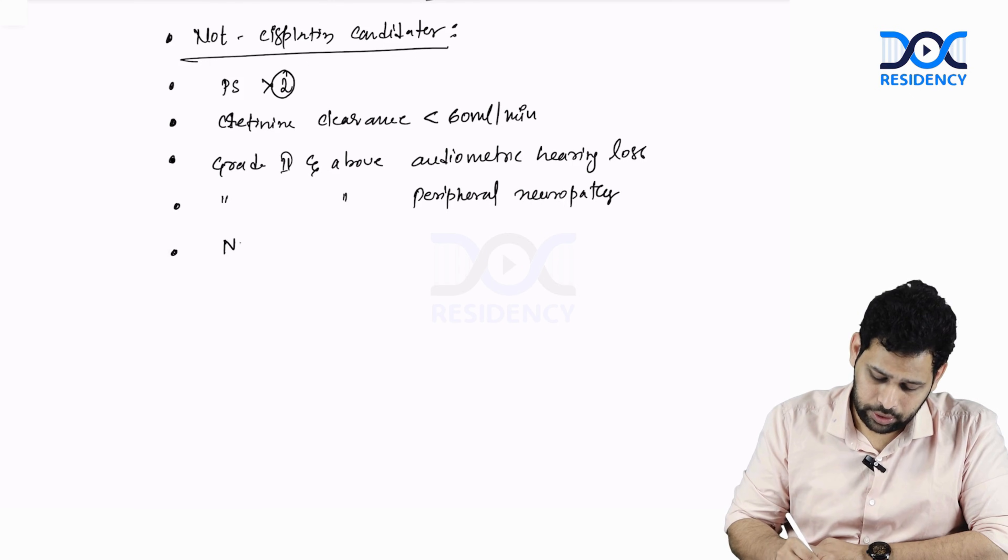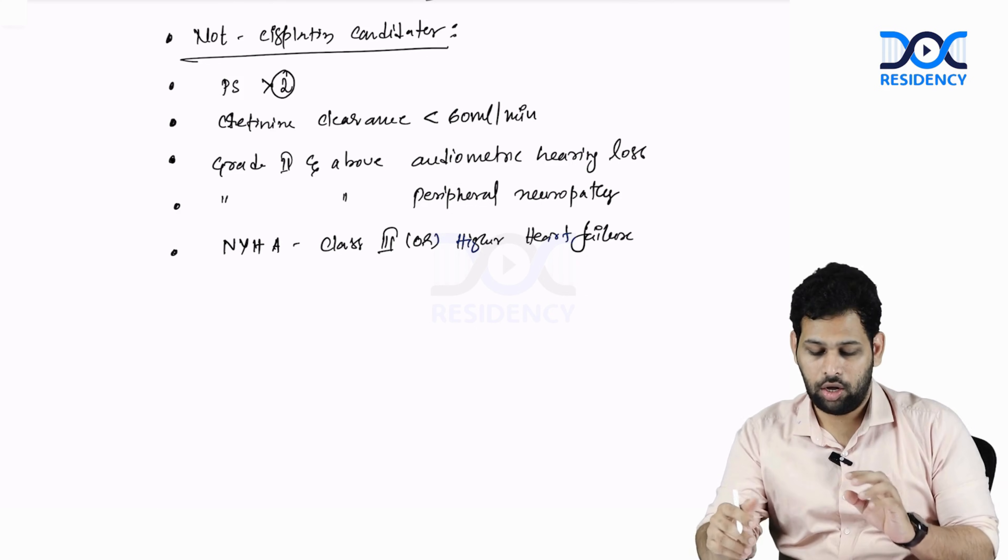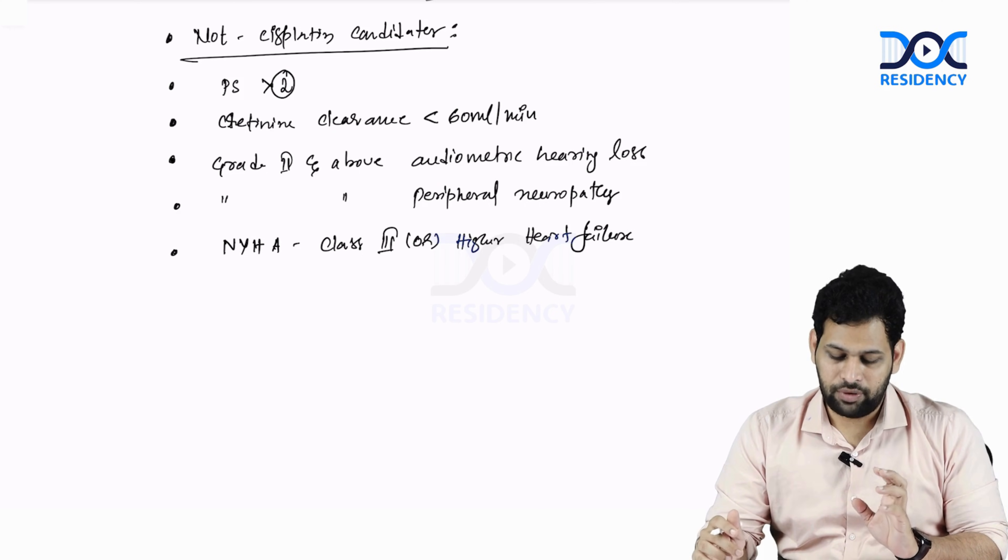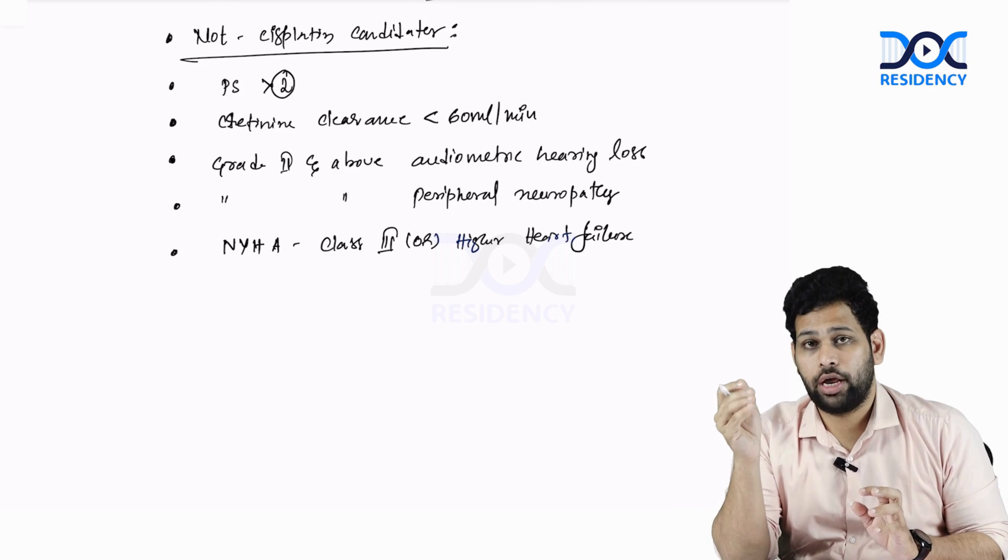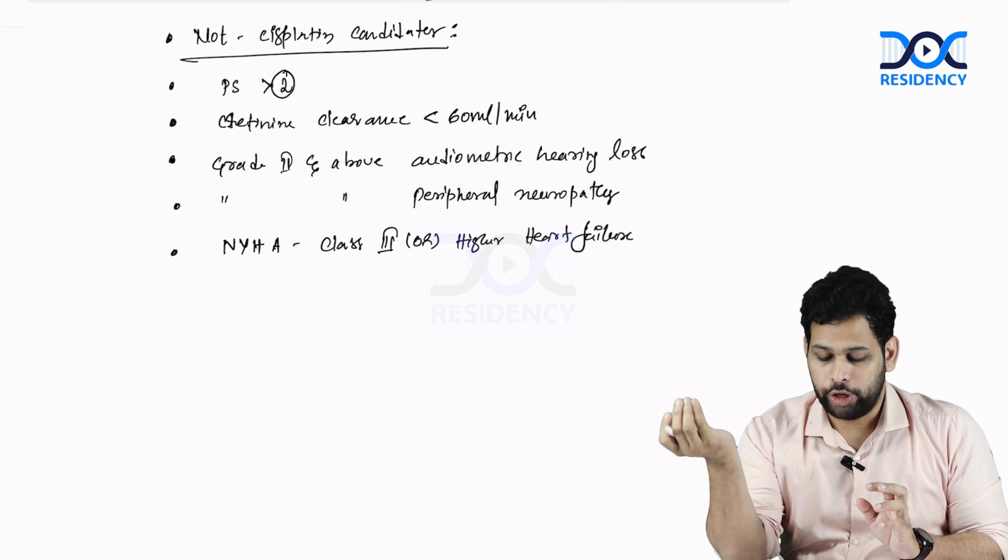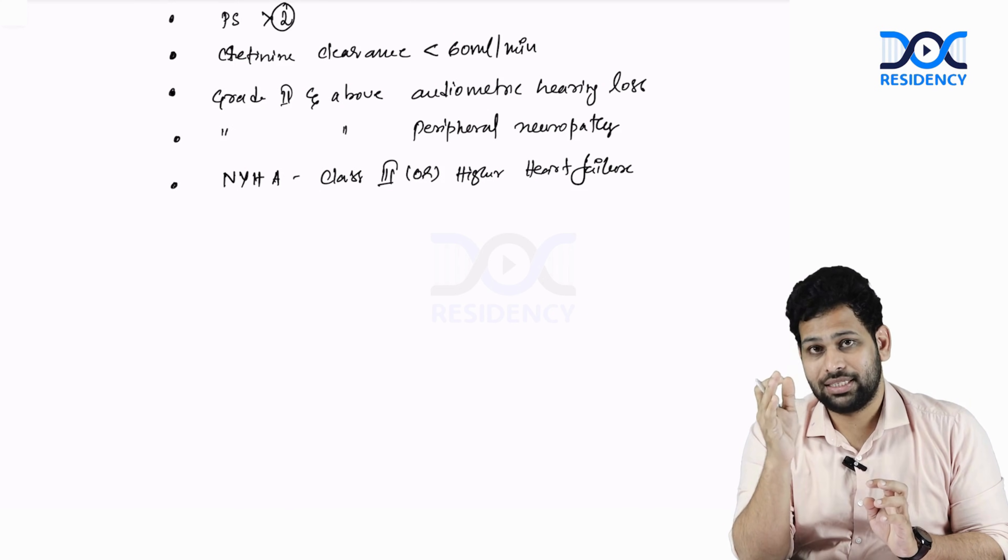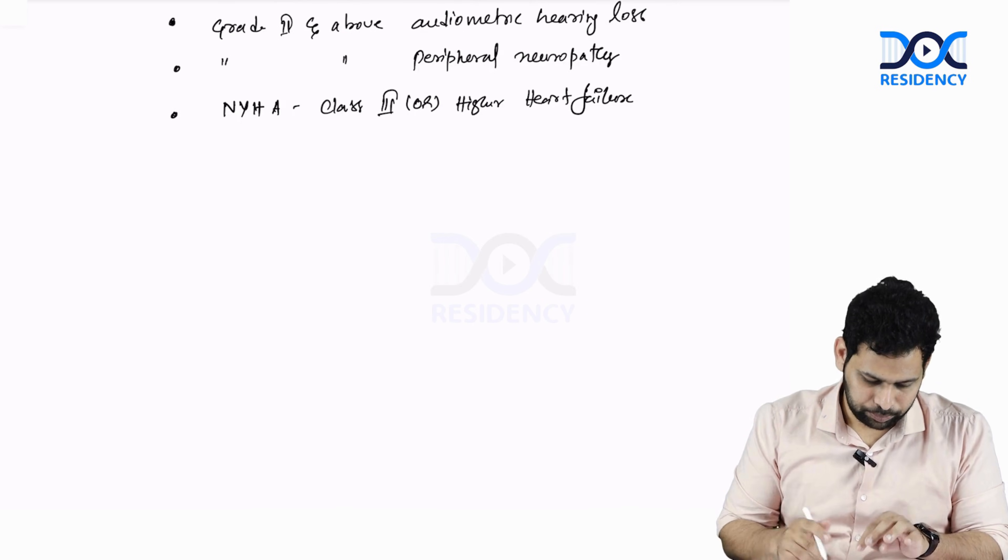NYHA class 3 or higher heart failure. These are all contraindications for cisplatin: performance status more than 2, creatinine clearance less than 60, grade 2 or above peripheral neuropathy and audiometric hearing loss, or NYHA class 3 or above heart failure. These are all non-cisplatin candidates.